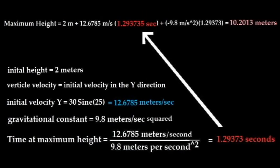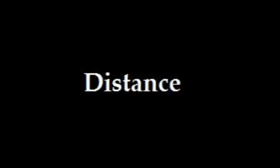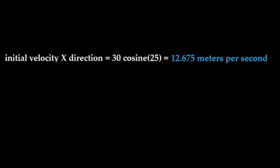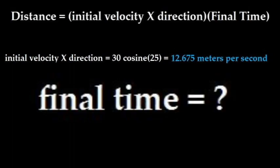Now that we have the time at maximum height, we plug it into the equation to solve for maximum height and find that the maximum height is equal to 10.2013 meters. To solve for distance, distance equals the initial velocity in the X direction multiplied by the final time. The initial velocity in the X direction can also be solved with trigonometry. Cosine is equal to adjacent over hypotenuse. Cosine of 25 degrees equals the velocity in the X direction over 30 meters per second.